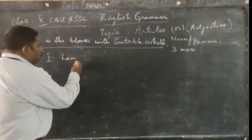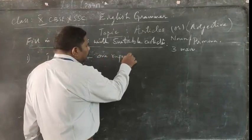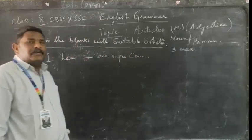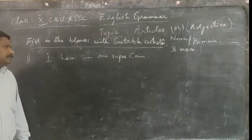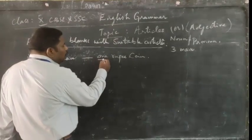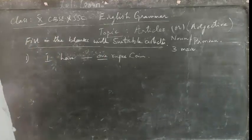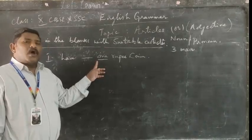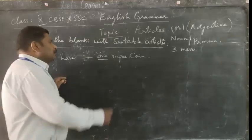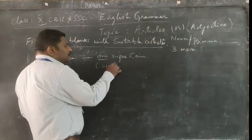I have [dash] one rupee coin. Dear students, if you look at this example, though the word 'one' starts with the letter O, if O is pronounced not as a vowel sound but as 'W' — like 'won' — then the sound of the word starts with W, not a vowel. Therefore, in this example, the letter O is not used as a vowel sound.